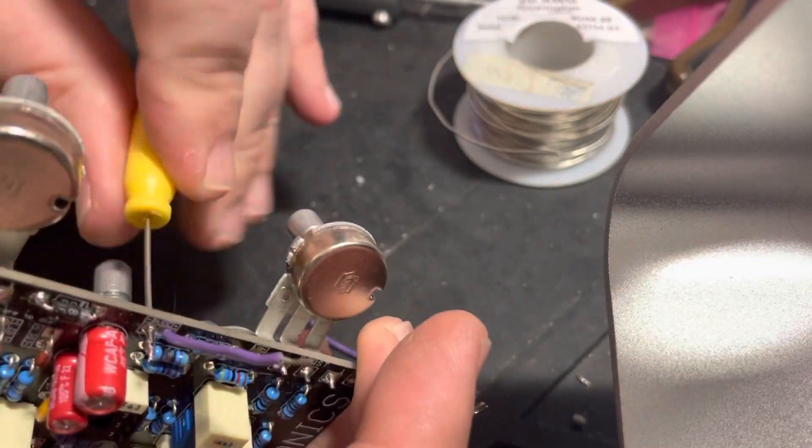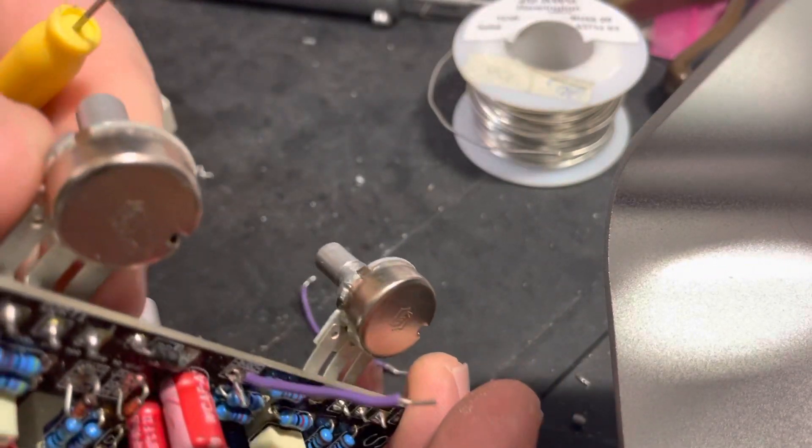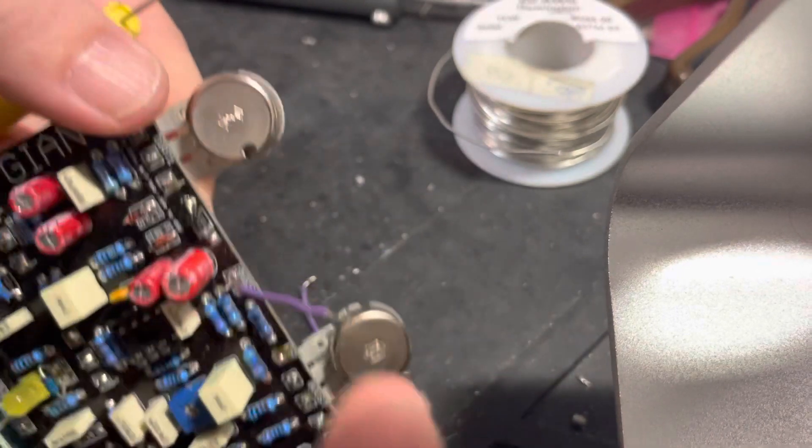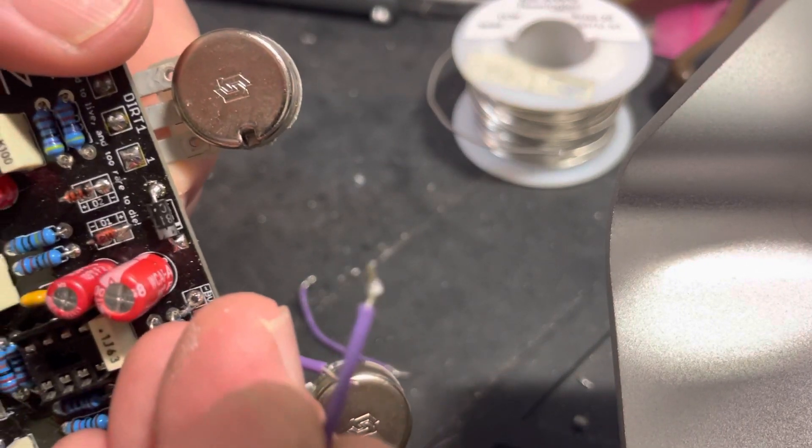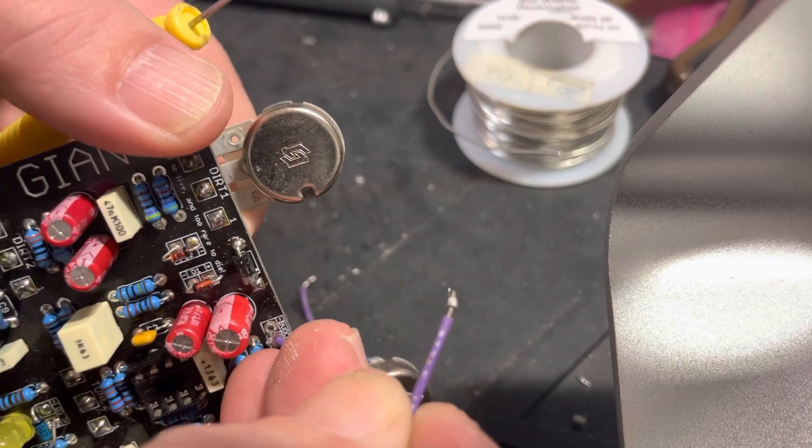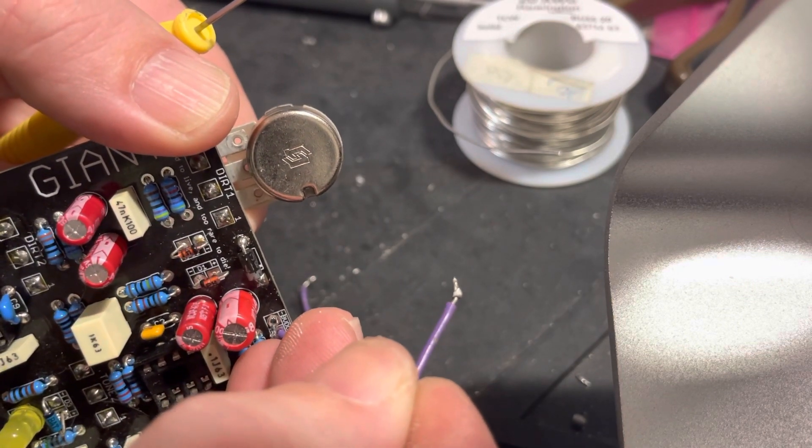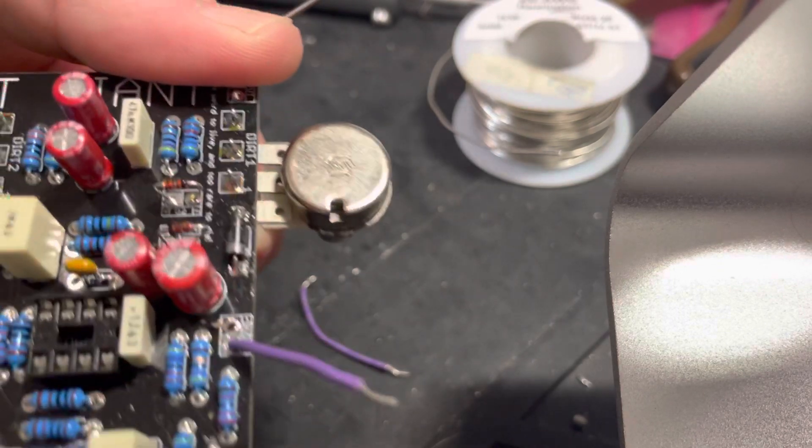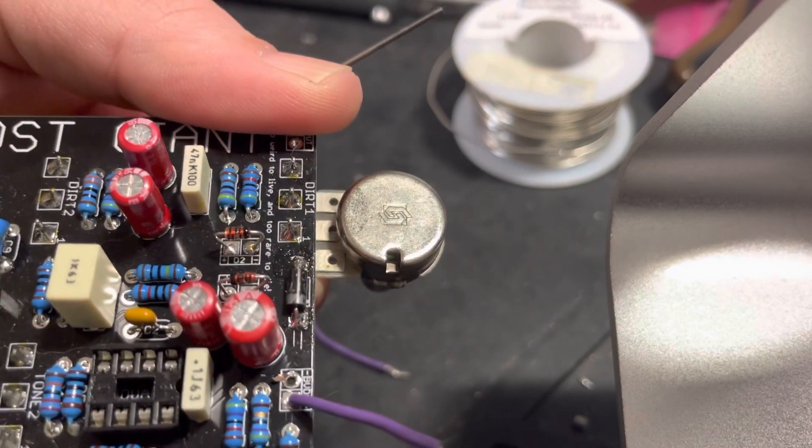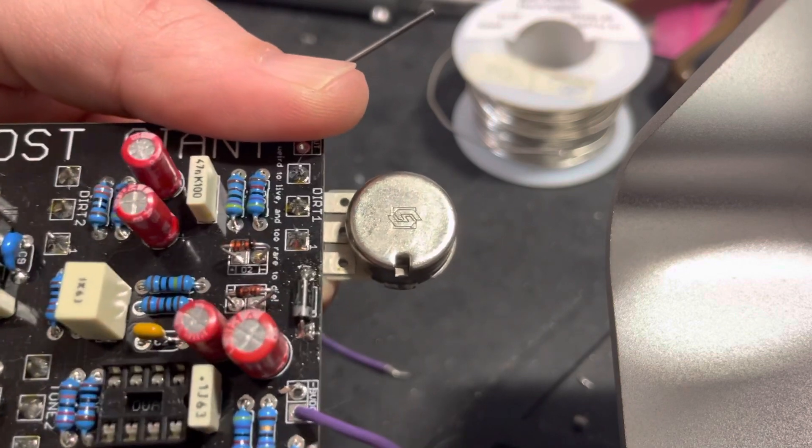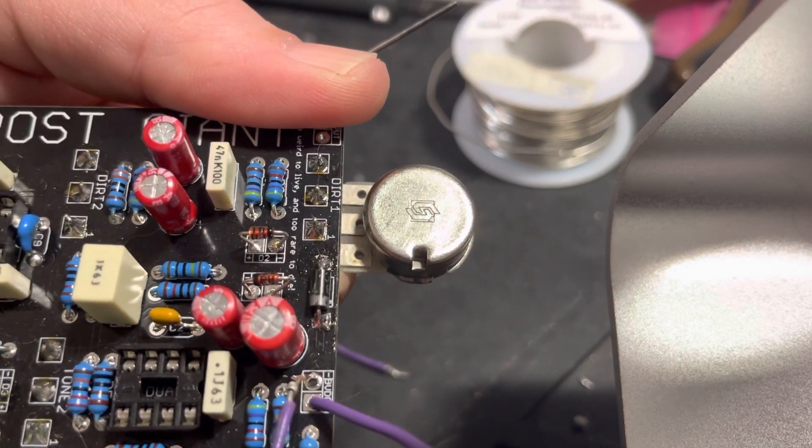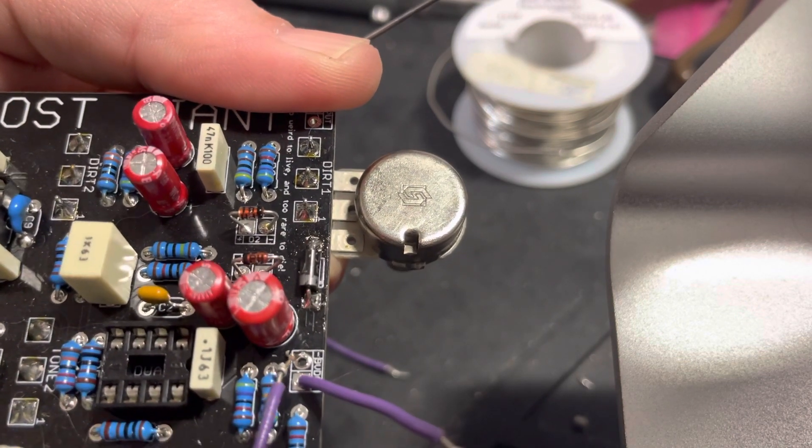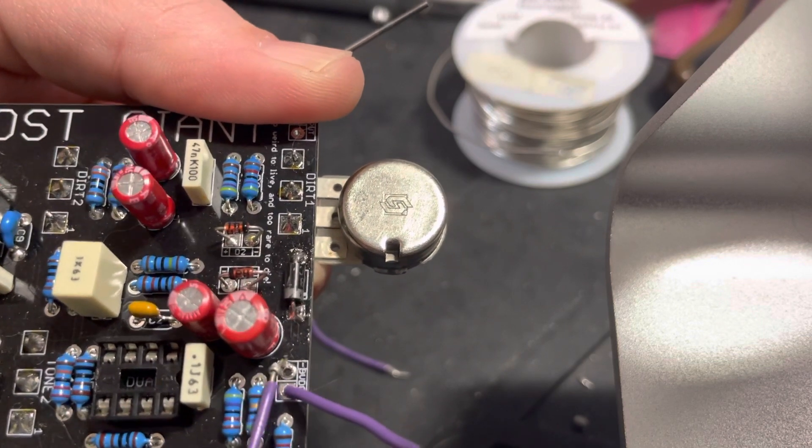You see all the excess solder on that. And that's just forcing it through. You don't want to do that at all. You see how much it leaves. And it did pull some of the pad off, not a lot, but enough that it could make an issue. You see it's kind of, you see the copper right there.